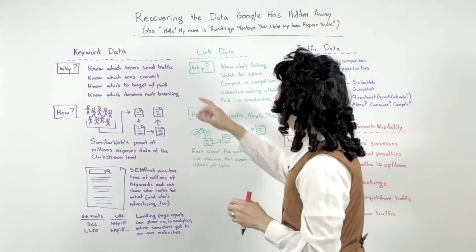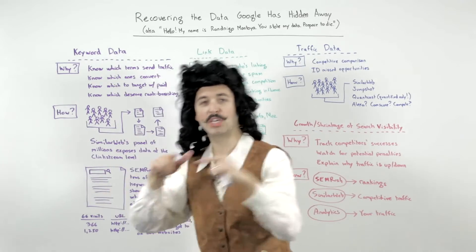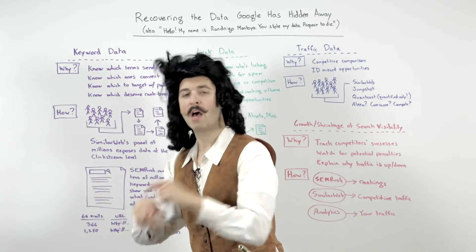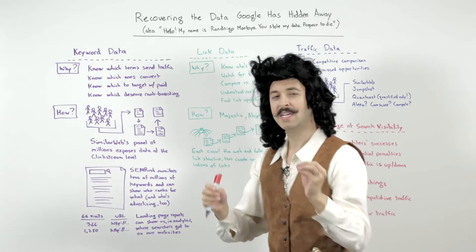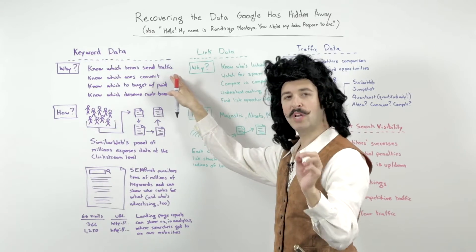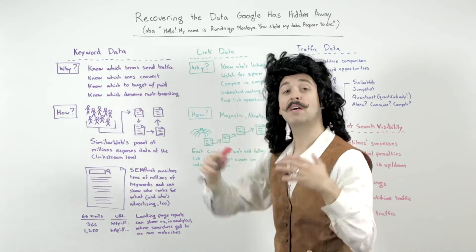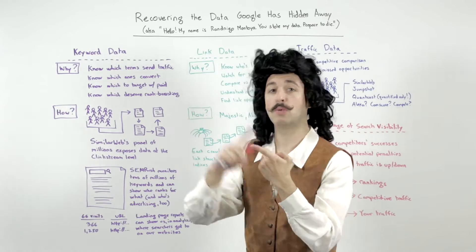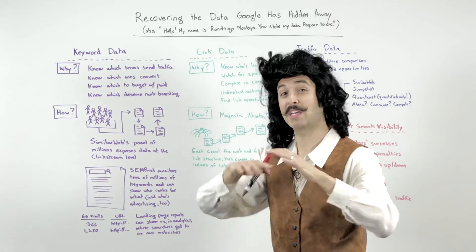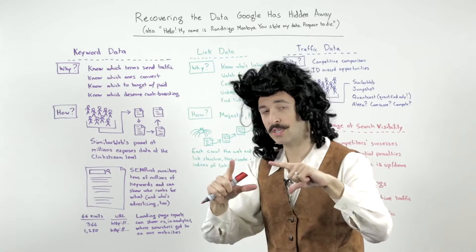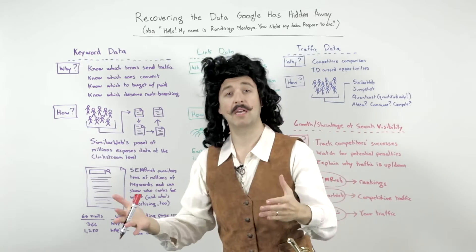Let's start with keyword data. We need keyword data about which keywords send traffic to our website, which keywords send traffic to other people's websites, which traffic comes from ads, which traffic comes from organic, where it goes, what it does. This is critical because we want to see which terms are actually sending the traffic so we can know which ones to concentrate on. We want to know which ones convert because if a keyword converts well, that probably means we should be focusing more energy on it, trying to rank higher for it, maybe bidding on it, or expanding the universe of terms and phrases around that term. We should know which ones to target with paid and which ones deserve some organic rank boosting efforts.